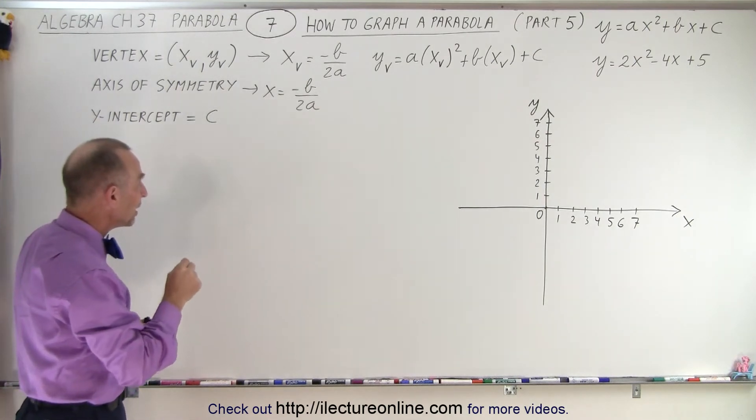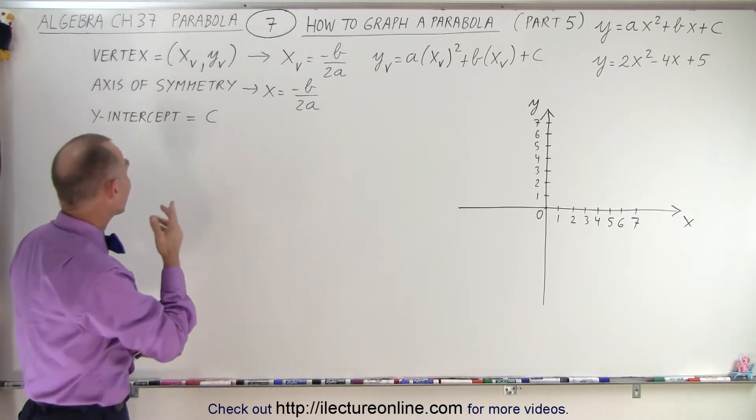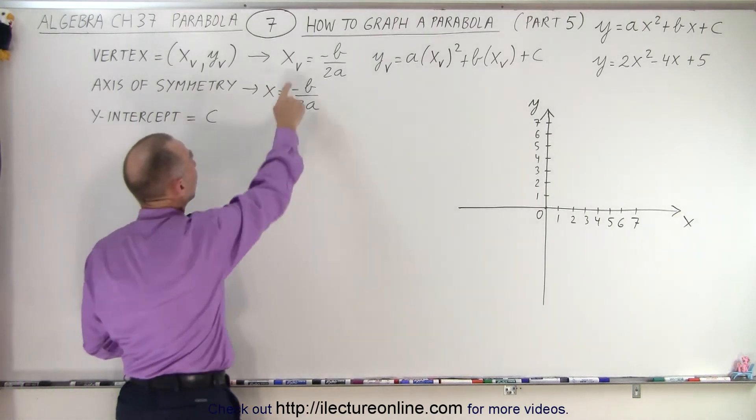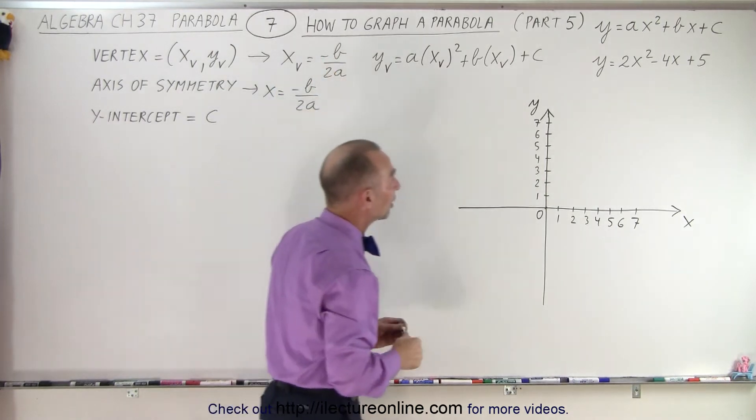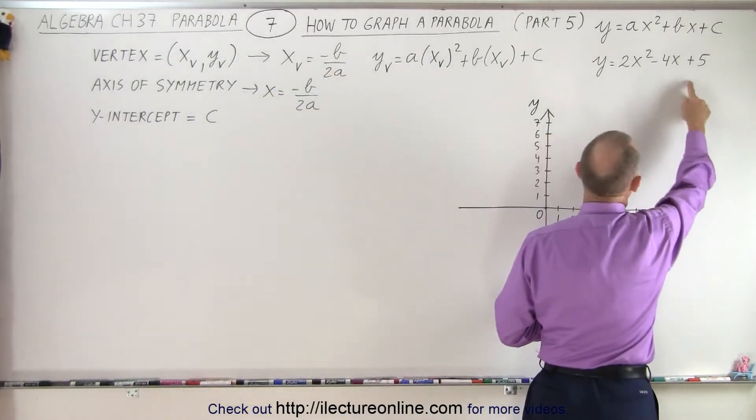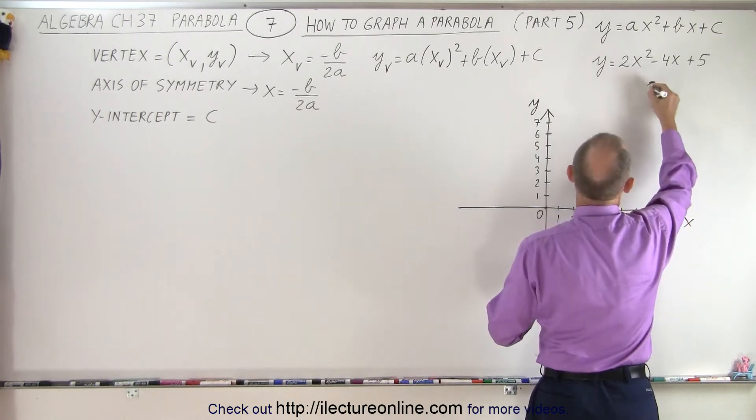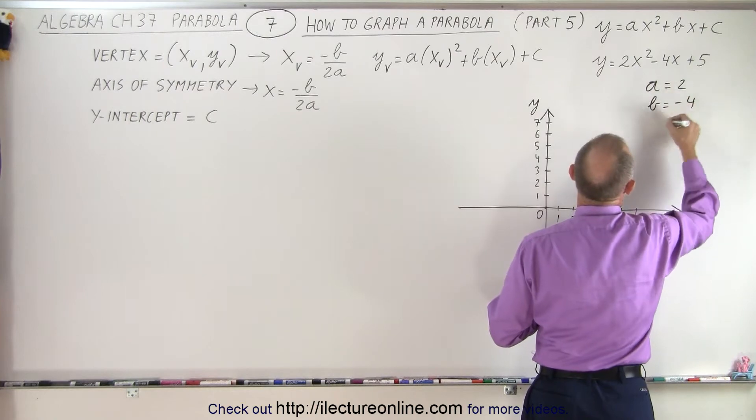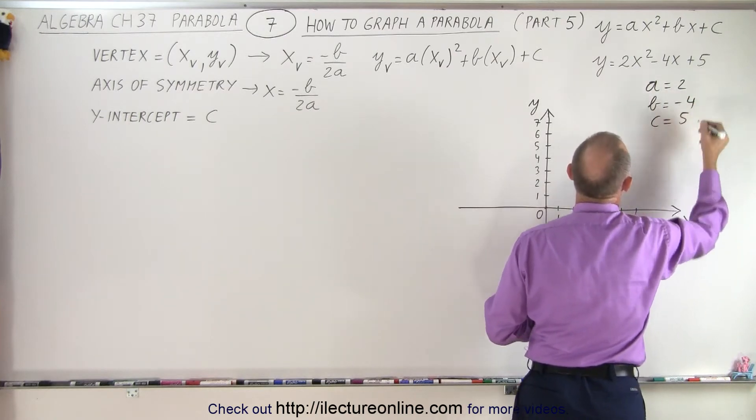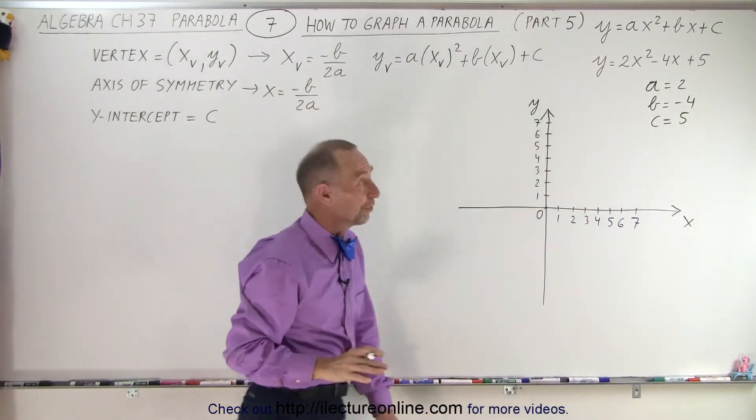But before we point out where the y-intercept is, let's simply find the vertex. And notice to find the vertex, the x-coordinate is simply minus b over 2a. And in this case, we can identify what a, b, and c are. You can see that a is equal to 2, b is equal to negative 4, and c is equal to 5. So let's go ahead and find the vertex first.